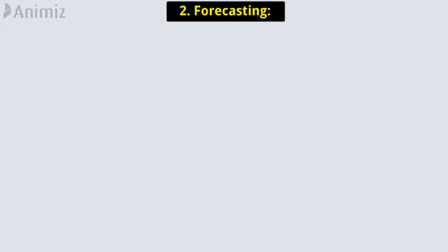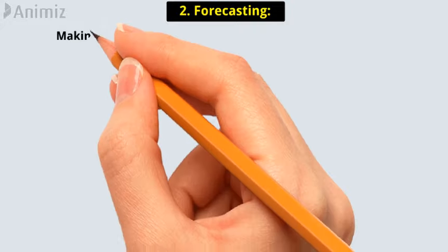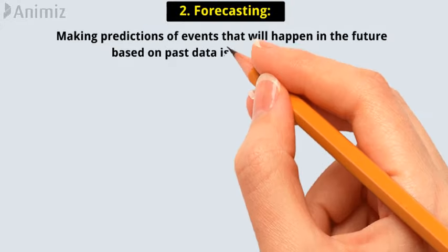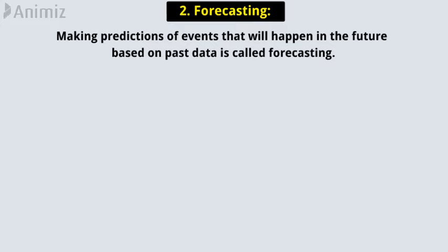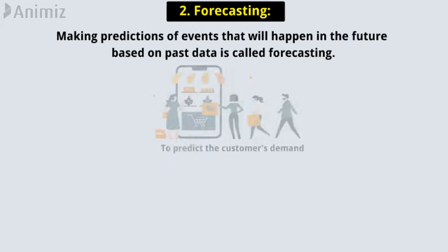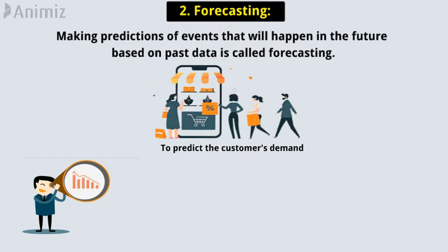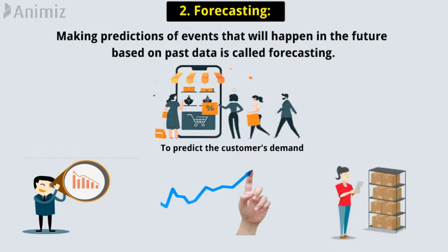2. Forecasting. Making predictions of events that will happen in the future, based on past data, is called forecasting. One of the duties of the operations manager is to predict the customer's demand for the company's product. The forecast helps the company to determine the future trends and the number of products needed to satisfy the market demand.